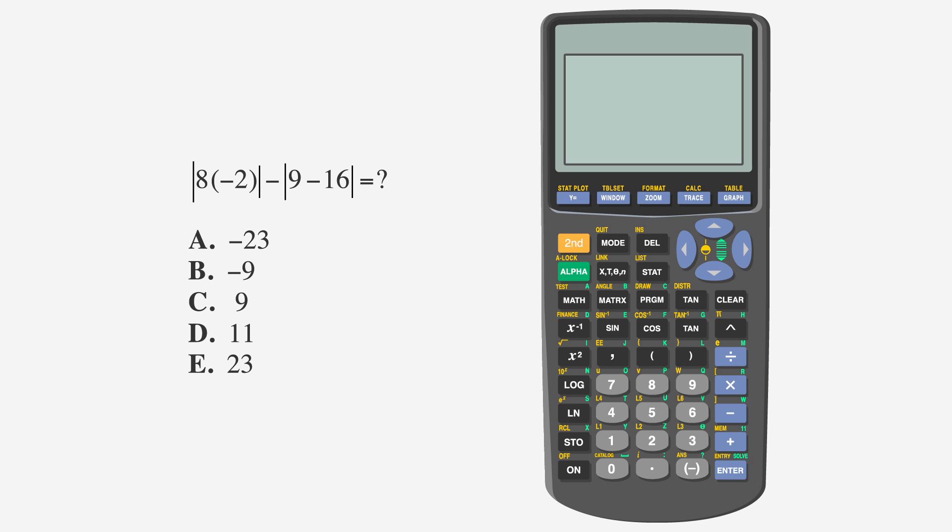To solve this with a calculator, we'll input each absolute value expression separately to reduce errors. First, we'll find the absolute value of 8 times negative 2 by typing second catalog enter 8 open parenthesis negative 2 close parenthesis enter. We get 16. Now, for the second expression, we need to find the absolute value of 9 minus 16. Hit second catalog enter 9 minus 16 enter. We get 7.